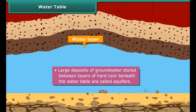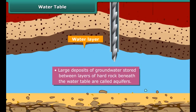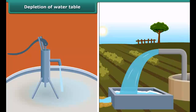Large deposits of groundwater stored between layers of hard rock beneath the water table are known as aquifers. Water in aquifers is usually pumped out by digging wells at locations where the water table is close to the surface of the ground.